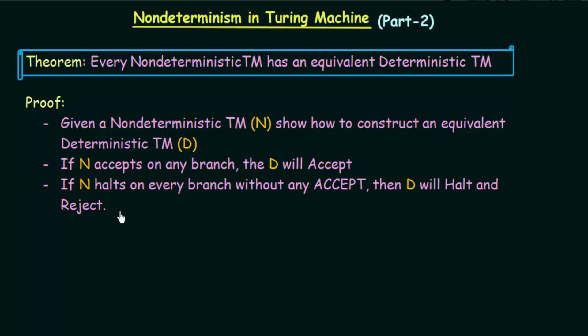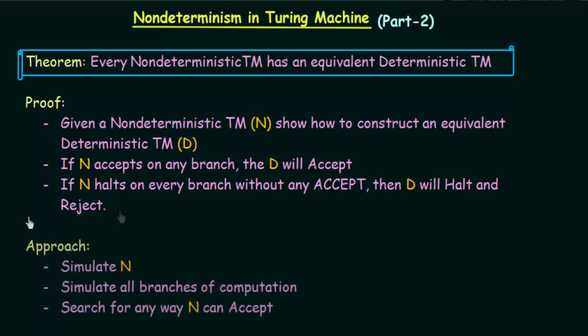The approach we need to follow is: first, simulate the non-deterministic Turing machine N and simulate all the branches of computation. We know the non-deterministic Turing machine will have many branches, so we have to simulate all of them and search for any way N can accept — searching through all those branches to see if any branch leads to an accept.